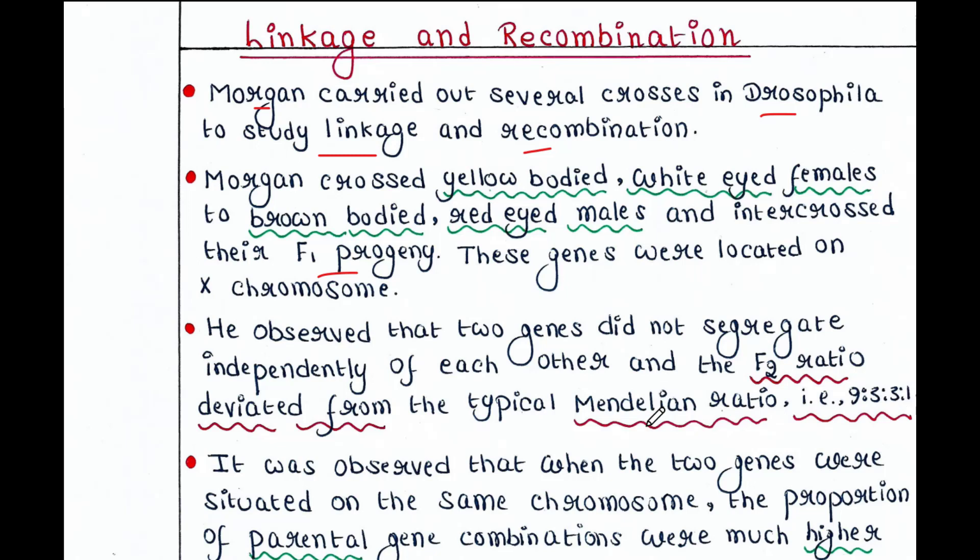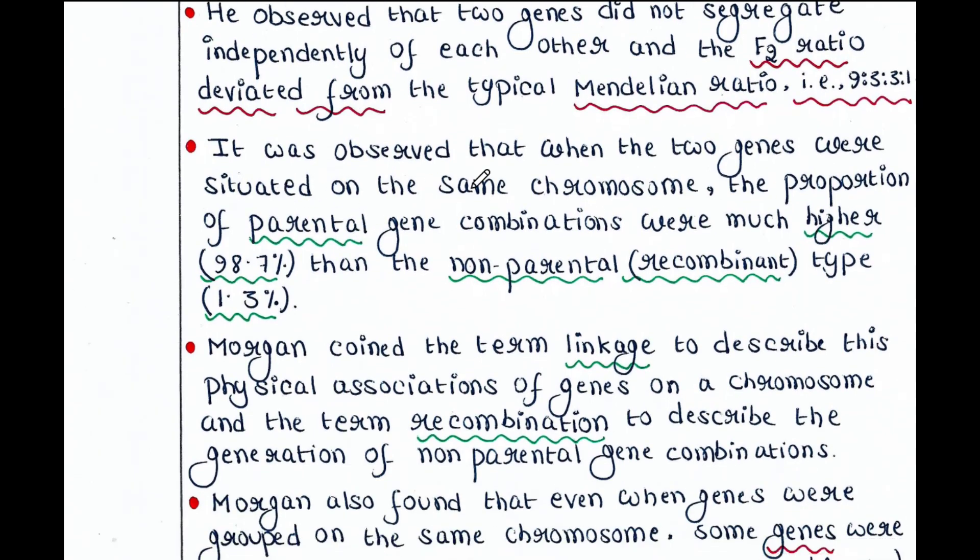When we found only parental type flies, no recombinants in F2 generation, the phenotypic ratio was 9:3:3:1. This is called Mendelian ratio. But this was not found when crossing over occurred. That means both parental and recombinant flies were there. That time this was not the case. They showed different phenotypic ratio. Actually, Mendel didn't include linkage and recombination in his theory. It was observed that when the two genes were situated on the same chromosome, the proportion of parental gene combinations were much higher, that is 98.7%, than the non-parental or recombinant type, that is 1.3% only. Morgan coined the term linkage to describe this physical association of genes on a chromosome, and the term recombination to describe the generation of non-parental gene combinations.